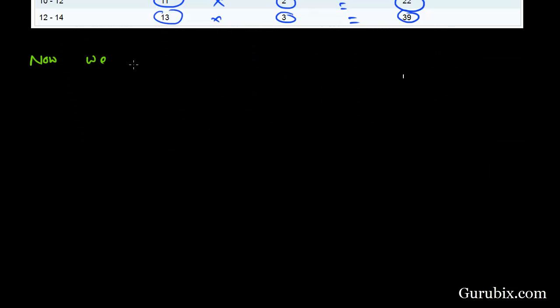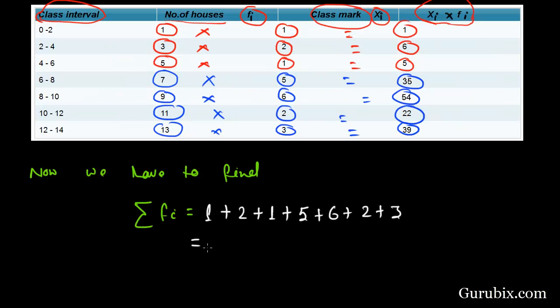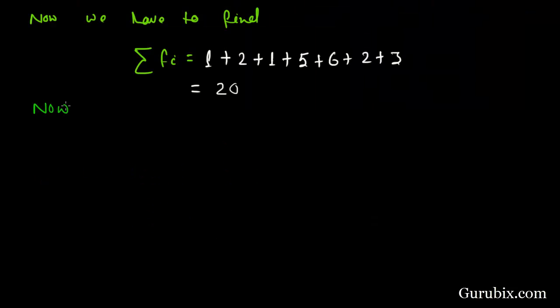Now, we have to find summation of fi, which is equal to 1 plus 2 plus 1 plus 5 plus 6 plus 2 plus 3, which is equal to 20.